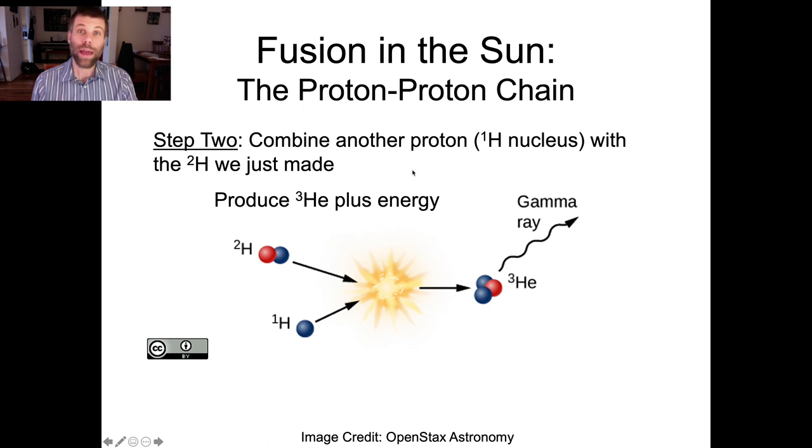That's the hard part. Once that happens, it's more or less smooth sailing in the Sun. So we take that ²H nucleus with one proton, one neutron. We smash another proton into it. We get two protons, one neutron, and we end up with ³He and also some energy coming out.